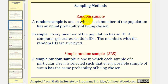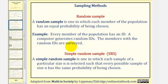The first method we'll discuss is a random sample, where each member of the population has an equal probability of being chosen. As an example, every member of the population has an ID, a computer generates random IDs, and the members with the random IDs are surveyed. This is an example of a random sample.